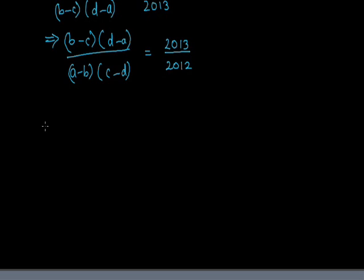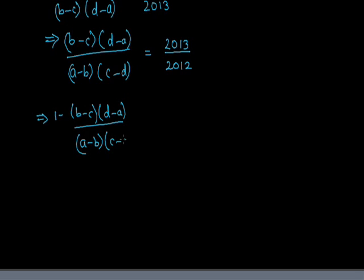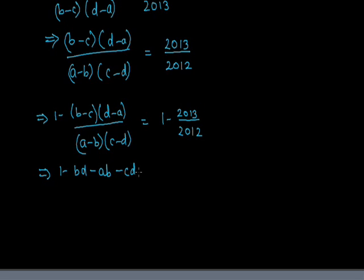In this term we can subtract the same numbers from both sides. We subtract both values from 1, so it becomes 1 minus on both sides. Opening the brackets: 1 minus (bd minus ab minus cd plus ac) upon (a minus b)(c minus d).